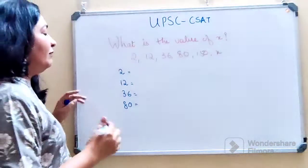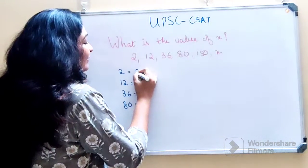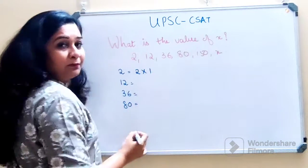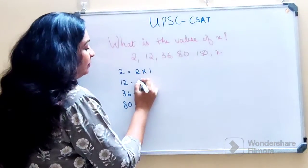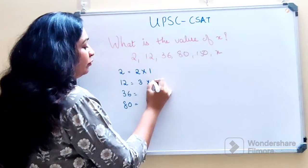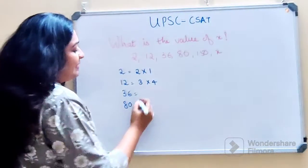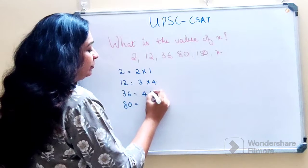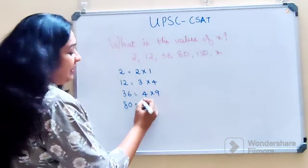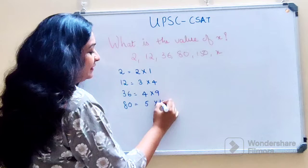So now if you look closely here I can write this as nothing but 2 into 1. This can be written as 3 into 4. And this can be written as 4 into 9. And this can be written as 5 into 16.